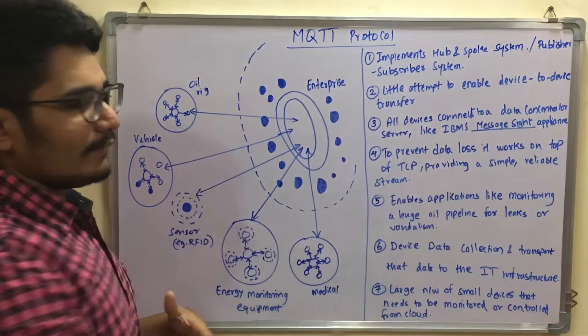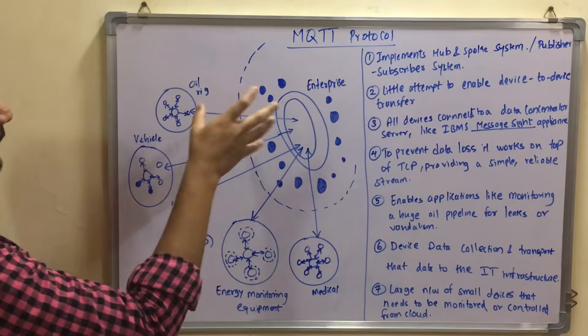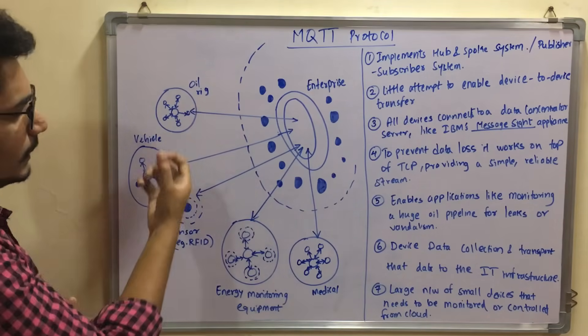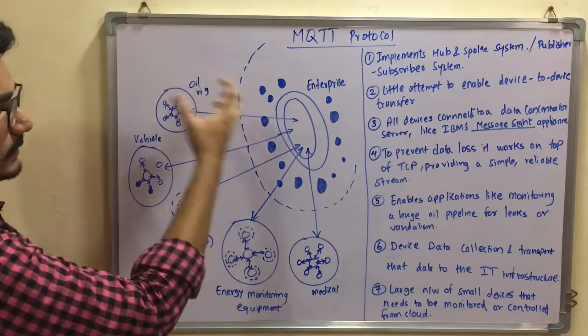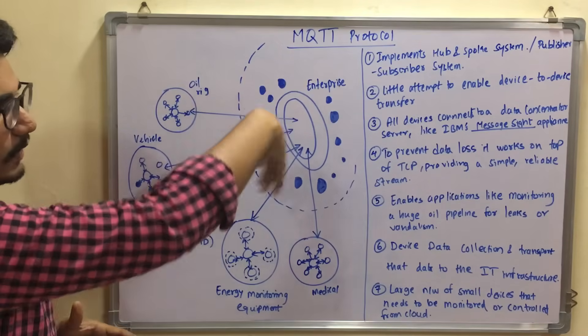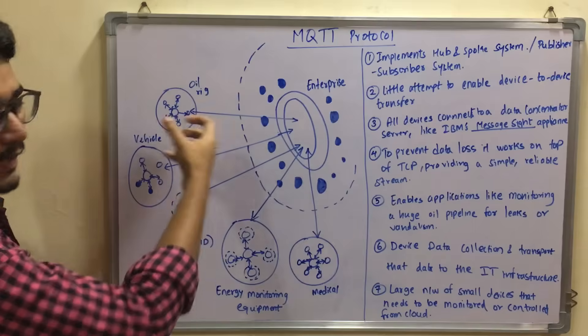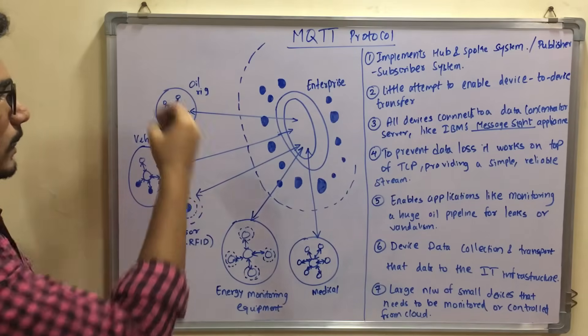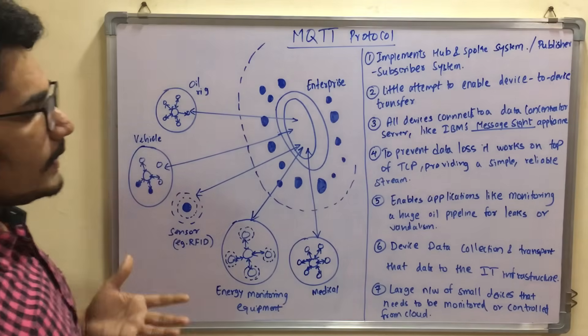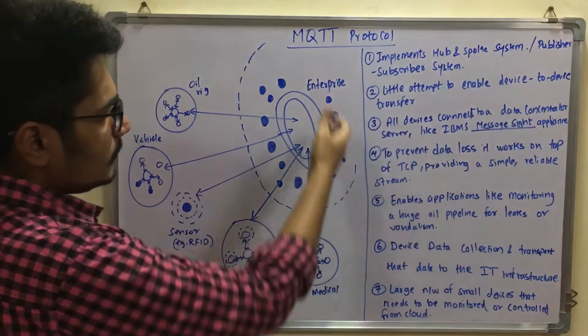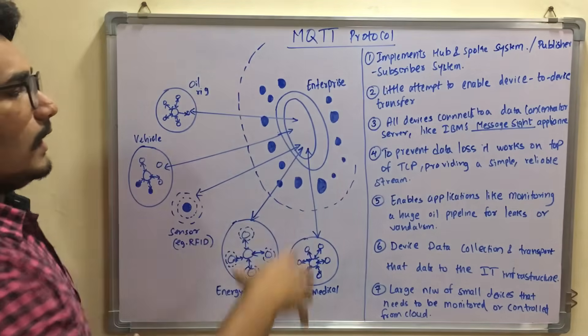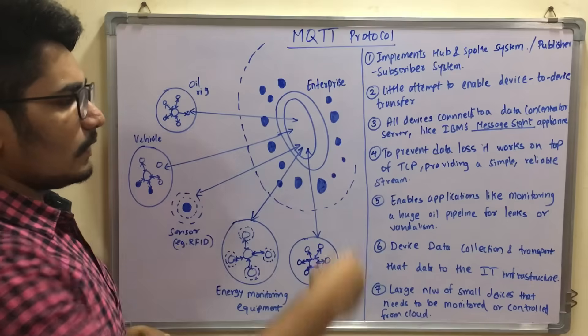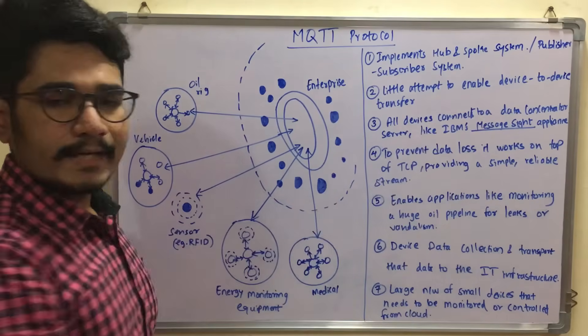There is little attempt to enable device-to-device transfer. It doesn't go to each device and collect all the data. Instead, since they are subscribed to this particular network or server, it then collects or sends data to that particular device or network. All devices connect to a data concentrator, that is this one which is a server which can be IBM's or any other Message Site Appliance.